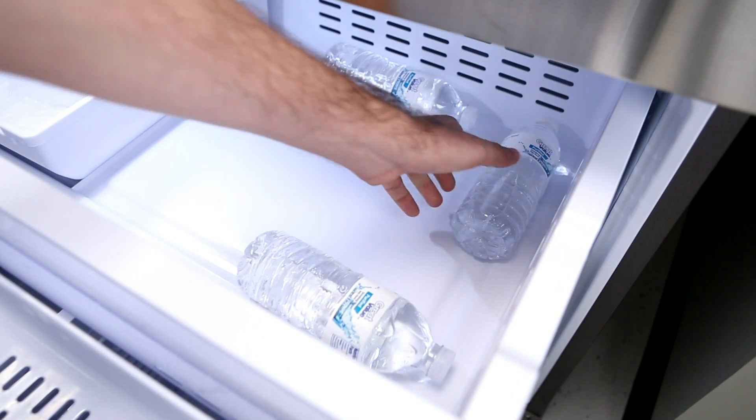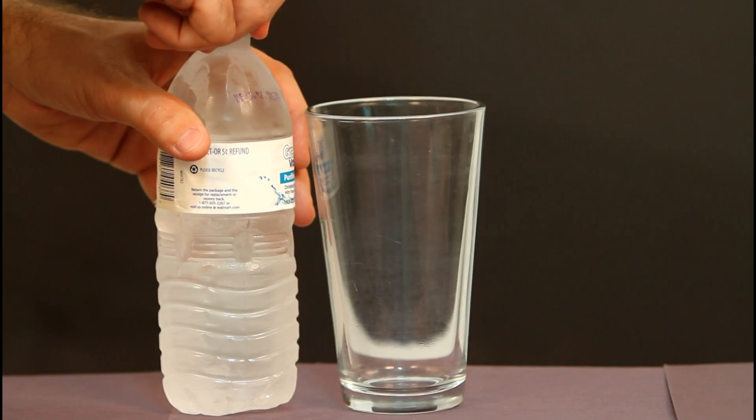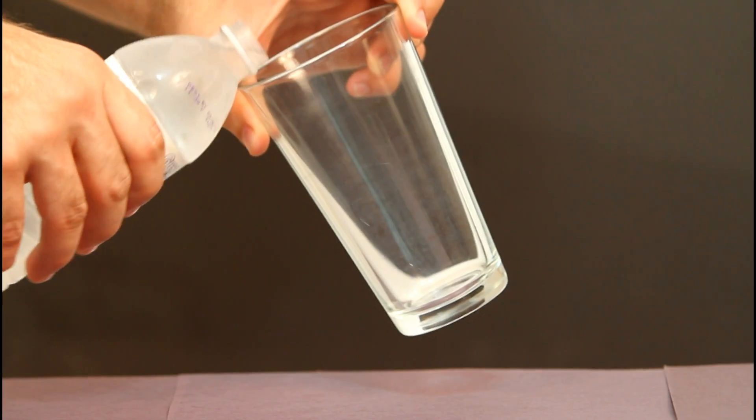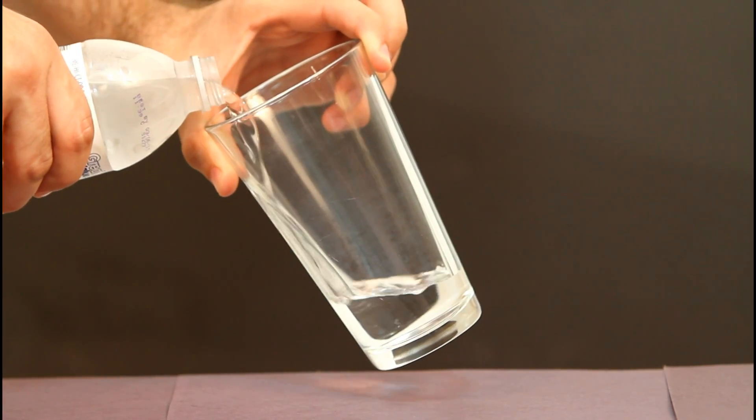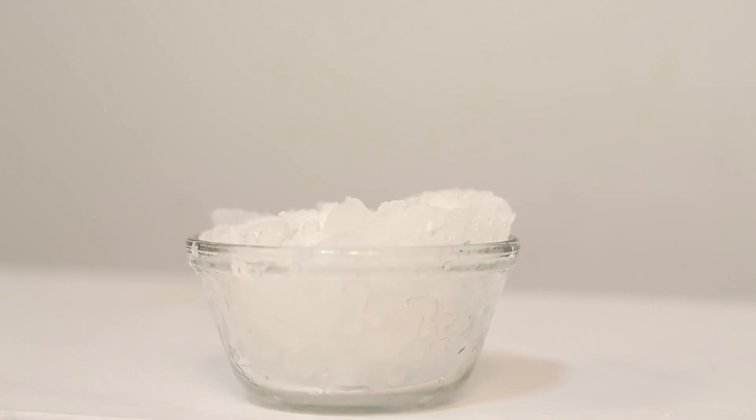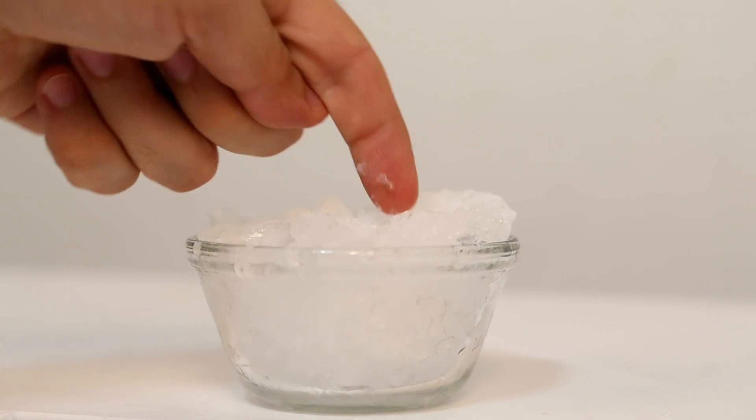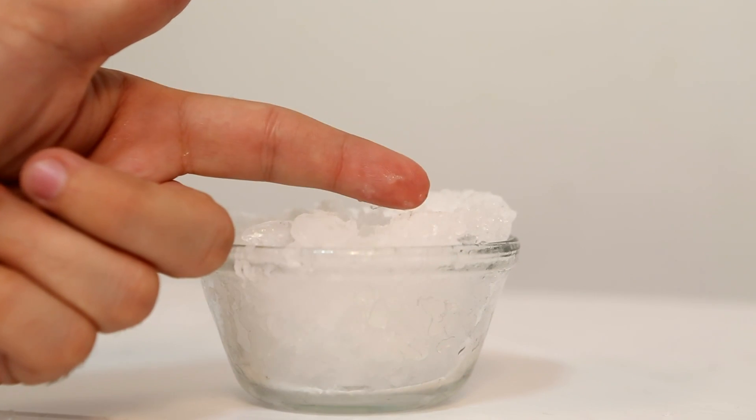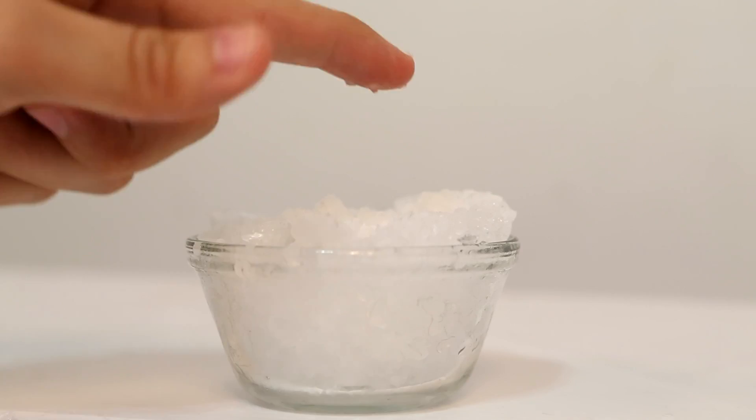When the timer rings, open the freezer slowly and carefully remove the cap. Tilt the bottle and slowly pour the water into a glass. Then place your finger over the crushed ice. You just need to make sure that at least one tiny piece of ice remains on the tip of your finger.